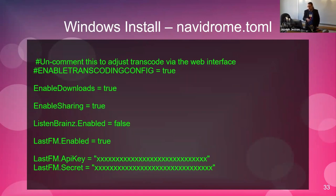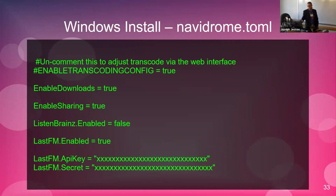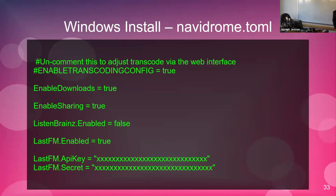Last.fm will 'scrobble' — that's their term. Scrobbling means anything I listen to, it sends data to Last.fm and keeps a record of it. Last.fm keeps a list of everything I've listened to for the last 10 years — I can see what I've listened to the most, see my whole history. It also allows for automatic mix creation. On both my Logitech Media Server and Navidrome, I can tell it to create a mix, and it looks at my listening history and creates a mix based on that.